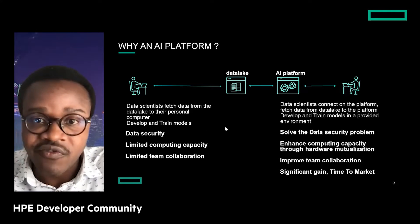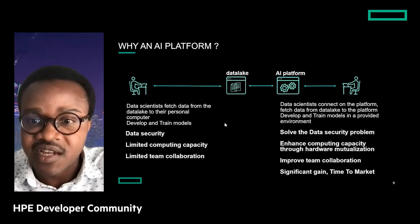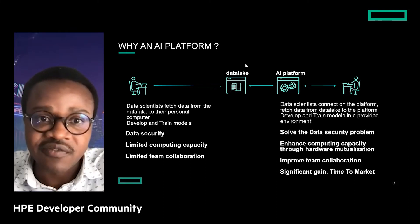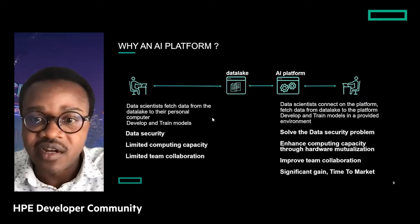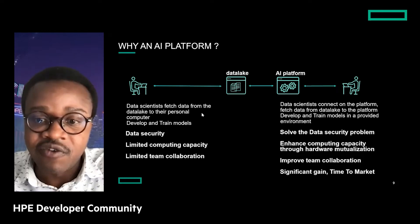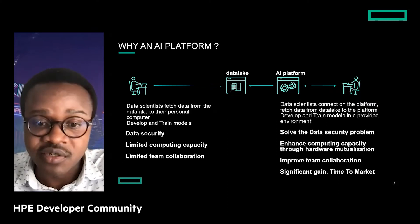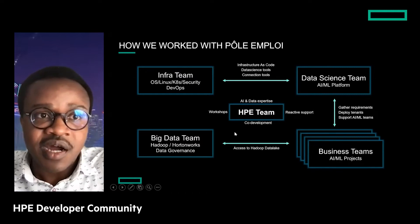The decision was made to create an AI platform where data scientists connect from their laptop but all development and training runs on the platform. The benefits: data stays on the platform solving data security issues, computing capacity scales with Kubernetes by adding more CPU or GPU, and collaboration improves. The gains were very significant for Pôle Emploi — they are now able to bring a new model to production very quickly.